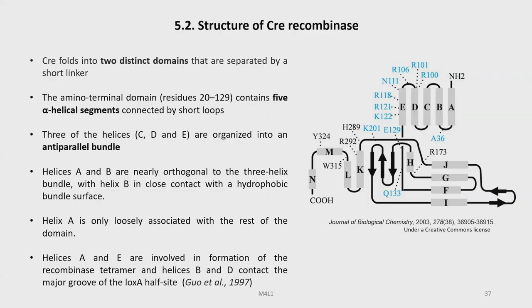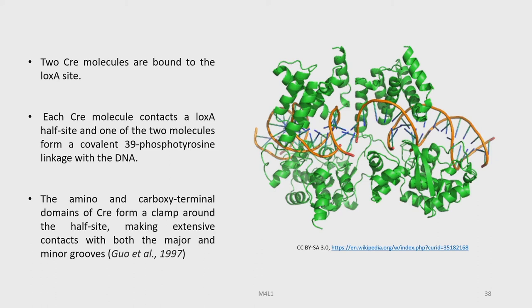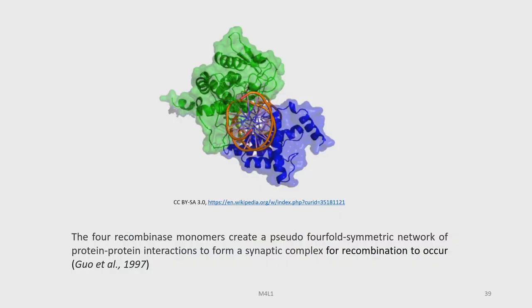Helices A and E are involved in formation of the recombinase tetramer. Helices B and D contact the major groove of the LoxP A half-site. Two Cre molecules are bound to the LoxP A site, each contacting a LoxP A half-site, and one of the two molecules forms a covalent 3'-phosphotyrosine linkage with the DNA. The amino and carboxy terminal domains of Cre form a clamp around the half-site, making extensive contacts with both the major and minor grooves. The four recombinase monomers create a pseudo-fourfold symmetric network of protein-protein interactions to form a synaptic complex for recombination to occur.